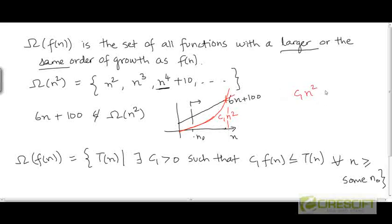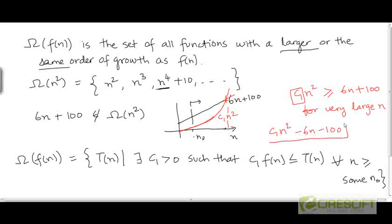So c₁ times n², it is not possible for c₁·n² to be greater than or equal to 6n plus 100 for very large n. Why? Because for very large values of n, since c₁ is positive, we are going to have c₁·n² minus 6n minus 100. For c₁·n² to be less than or equal to 6n plus 100, c₁·n² minus 6n minus 100 needs to be less than or equal to 0 for very large n.